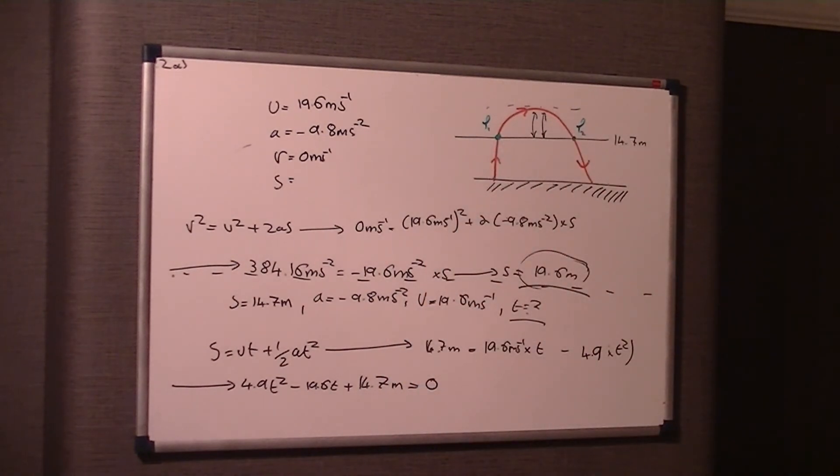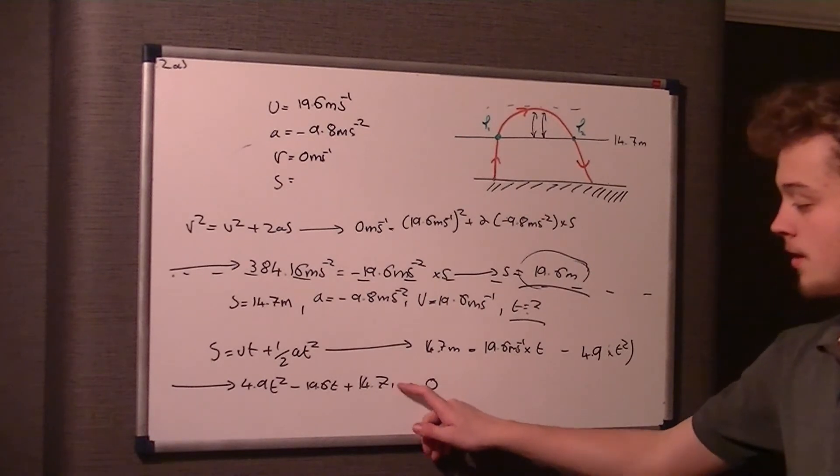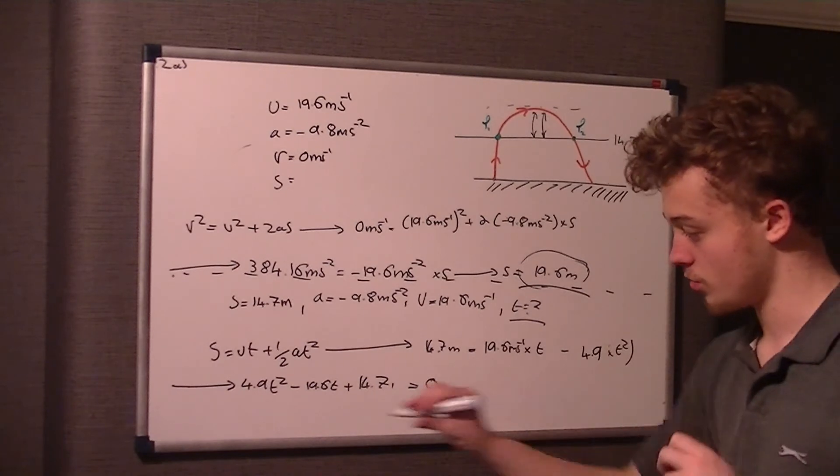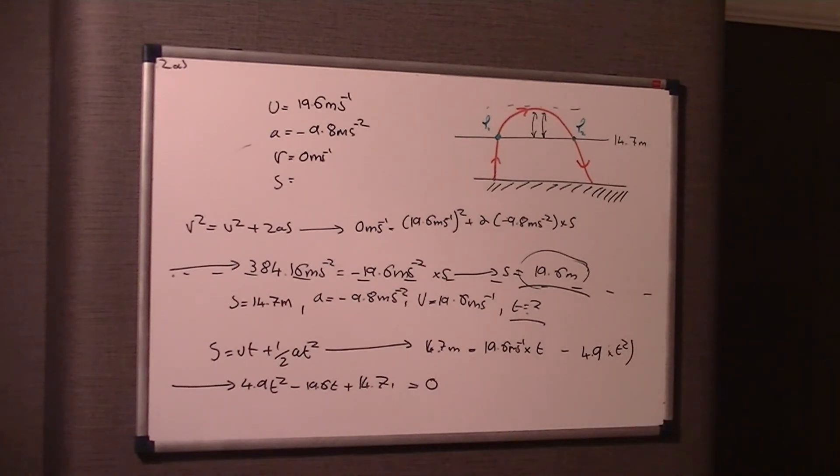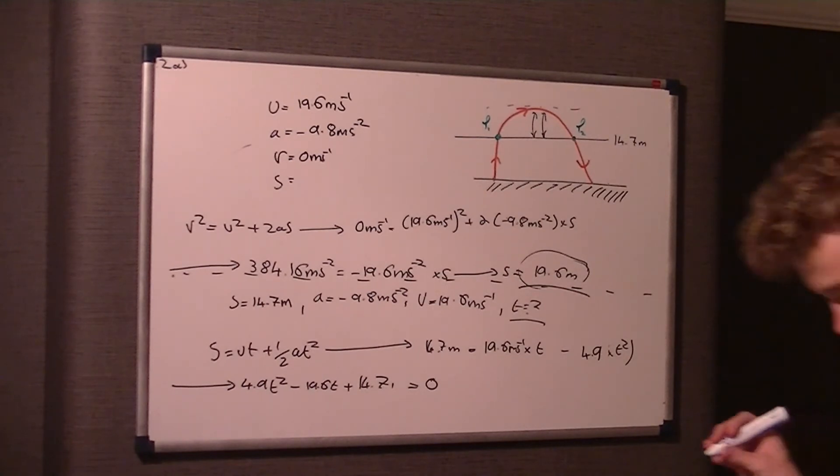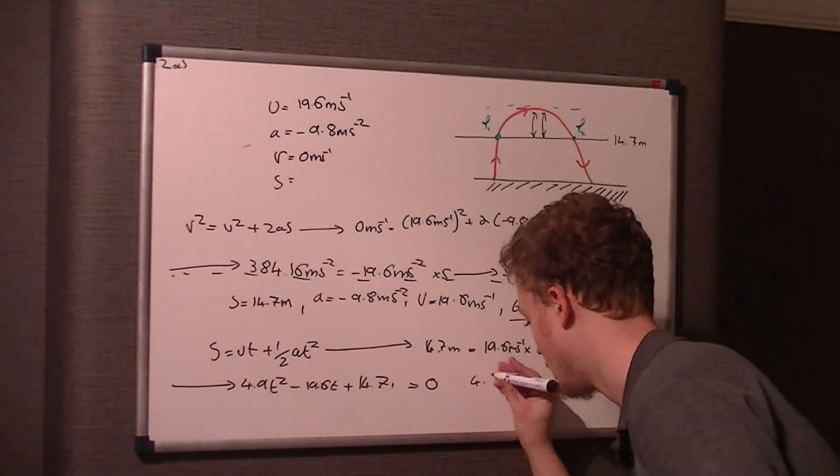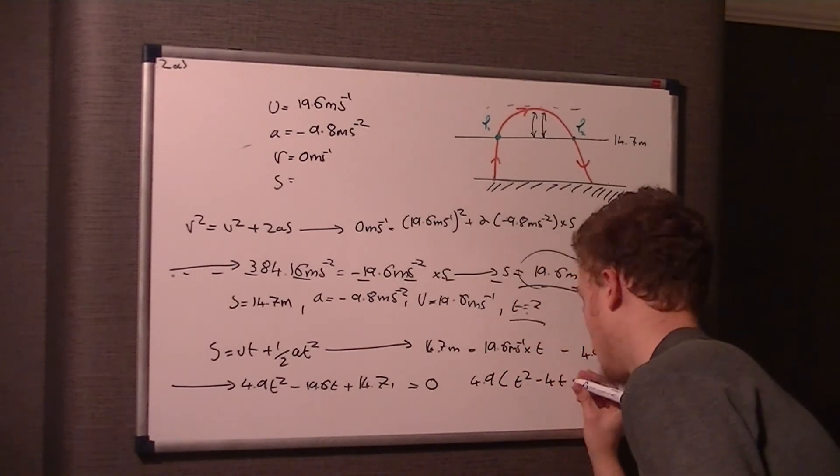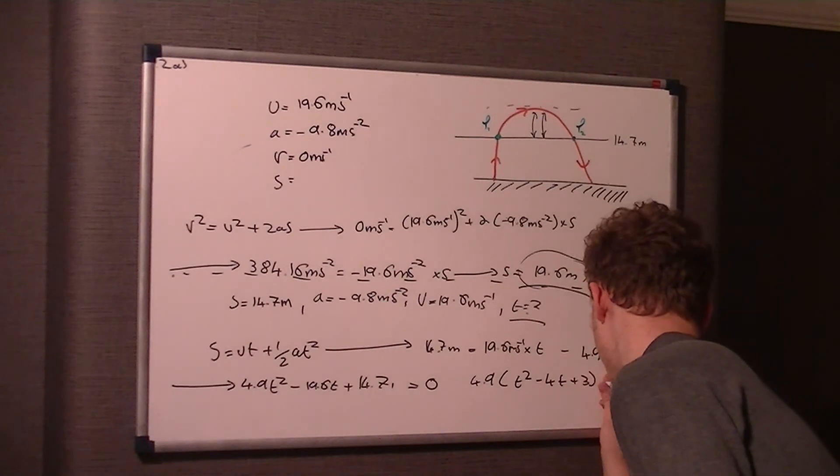We've almost got a SUVAT equation here. When you have a quadratic equation, you'll see x and x squared, but we've got t and t squared and a standard number there, so it's a very similar philosophy. So what we're going to do is put t squared as being positive, so we're going to move all this to the right-hand side. So if we rearrange that, that gets us 4.9 t squared minus 19.6 times t plus 14.7 equals zero. You can take out 4.9 as a common factor. It's 4.9 times t squared minus 4t plus 3 equals zero.